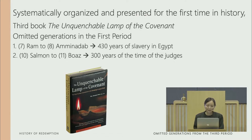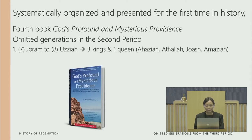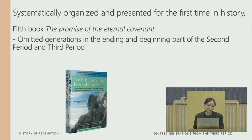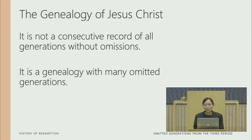In the fourth book, God's Profile and Mysterious Providence, there are omitted generations in the second period from Jehoram to Uzziah — three kings and one queen who were omitted. And in the fifth book, The Promise of the Eternal Covenant, there are also omitted generations that Reverend Abraham Park revealed. Through these three books in the History of Redemption series, we know that the genealogy of Jesus Christ is not a consecutive record of all generations without omissions — it is actually a genealogy with many omitted generations.